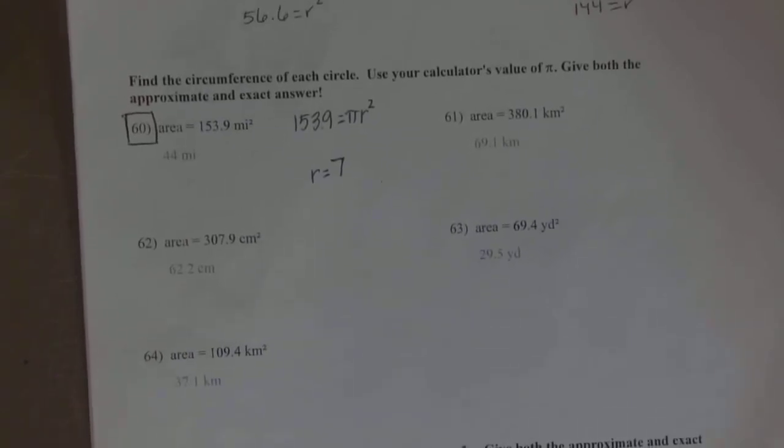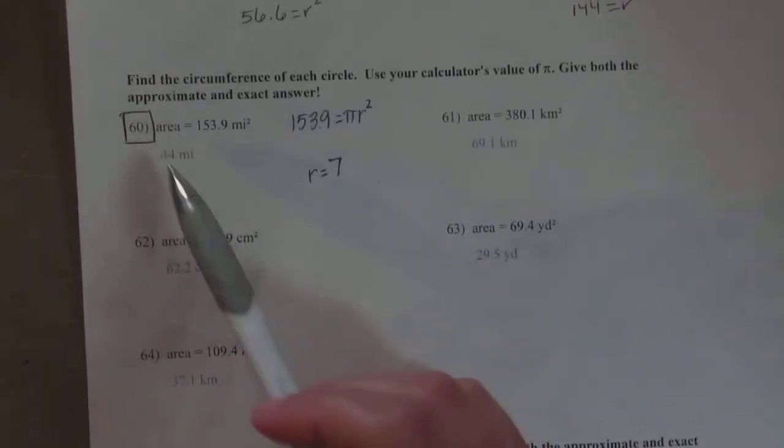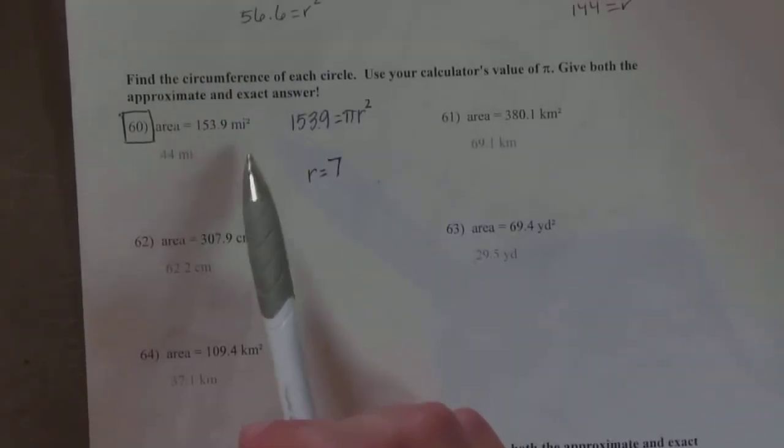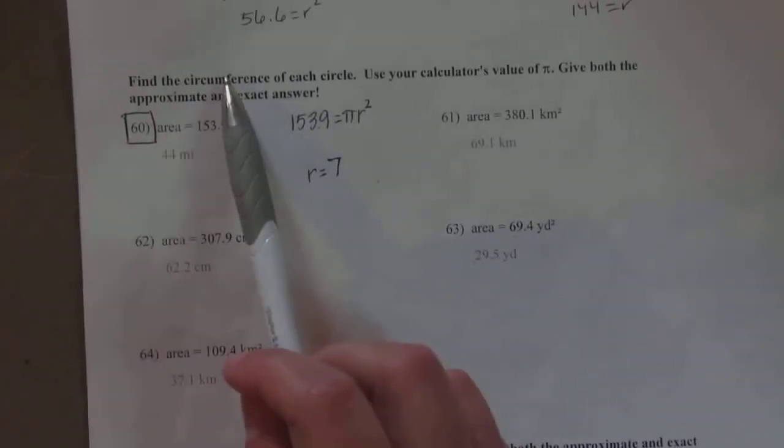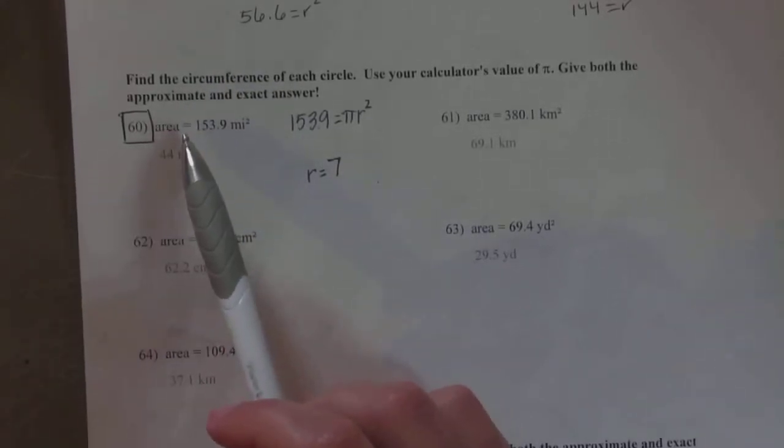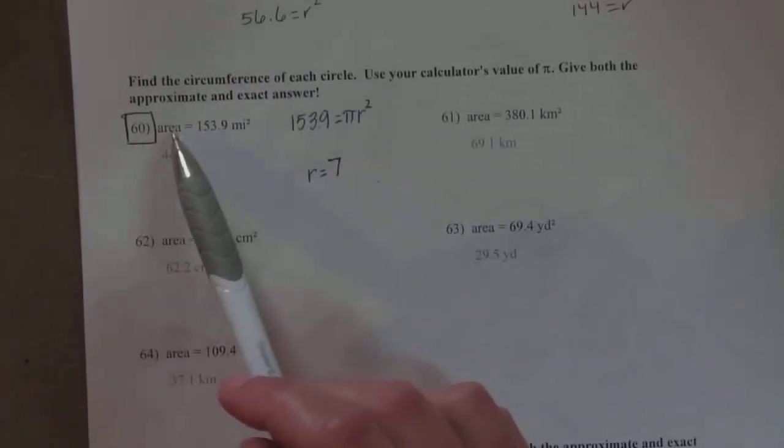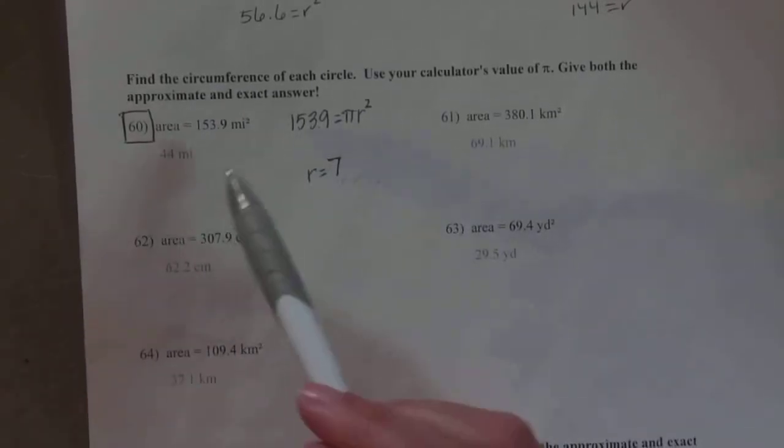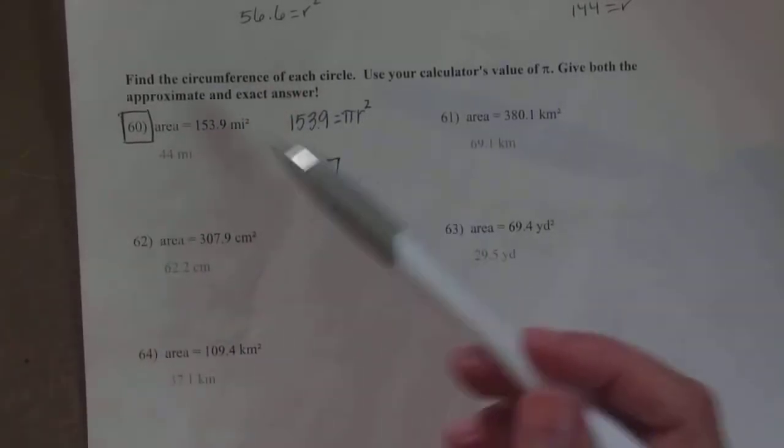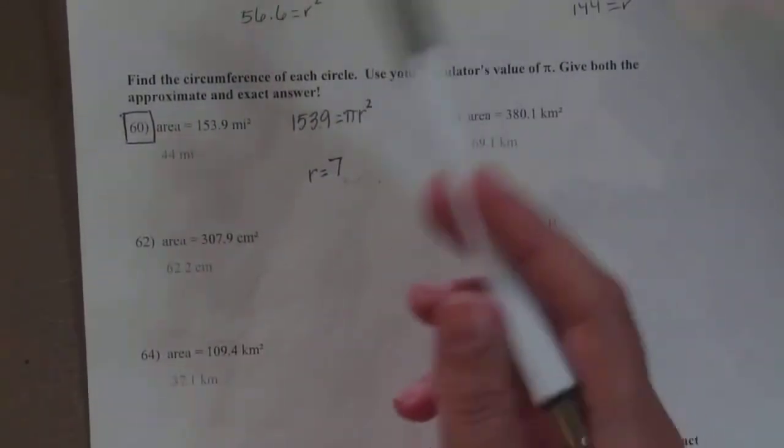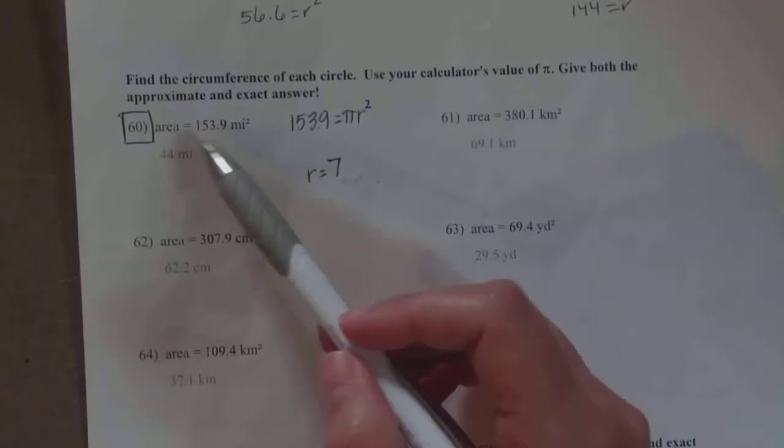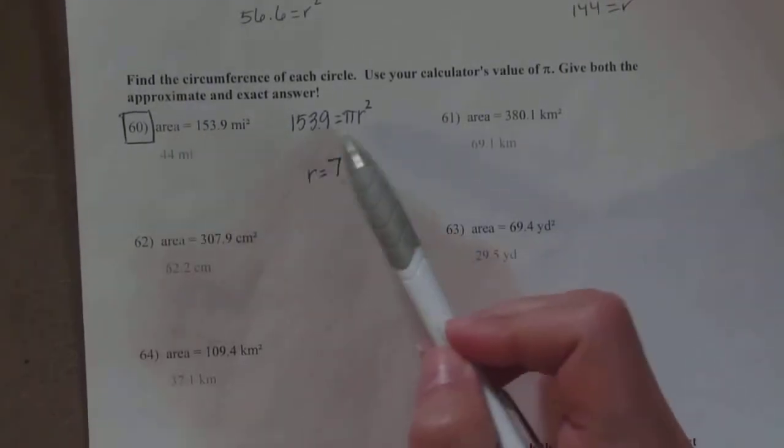Now if you skip down to number 60, this one is giving the area and asking you to find the circumference. You're like, what? You can't just jump from one to the other. There's not a direct connection. You have to first find the radius and then plug that in to find the circumference. You're going to start these problems the exact same way you would have done those eight problems before it. You have to find the radius first.